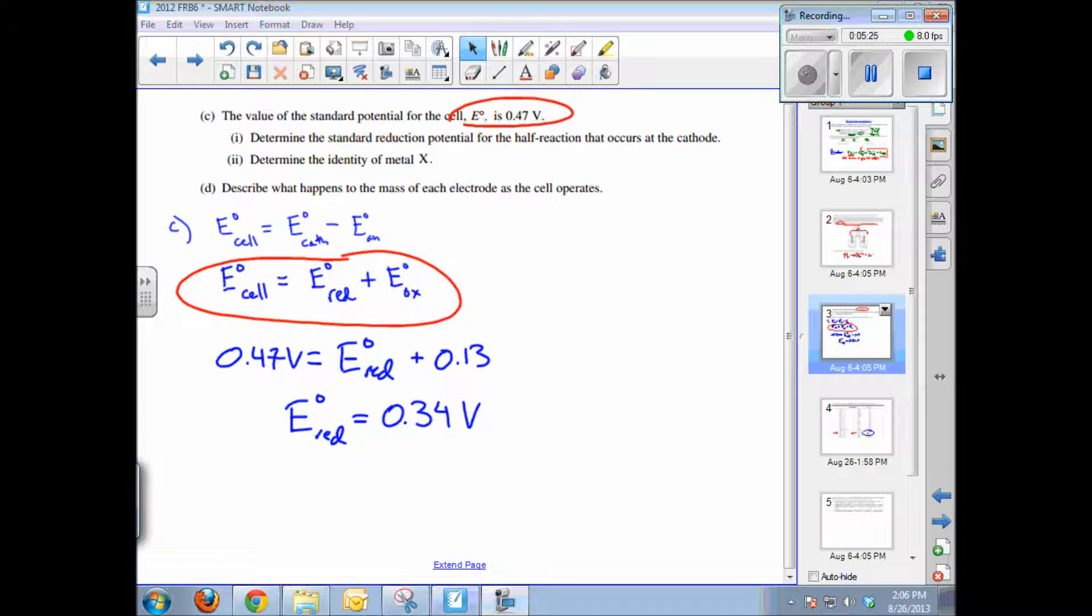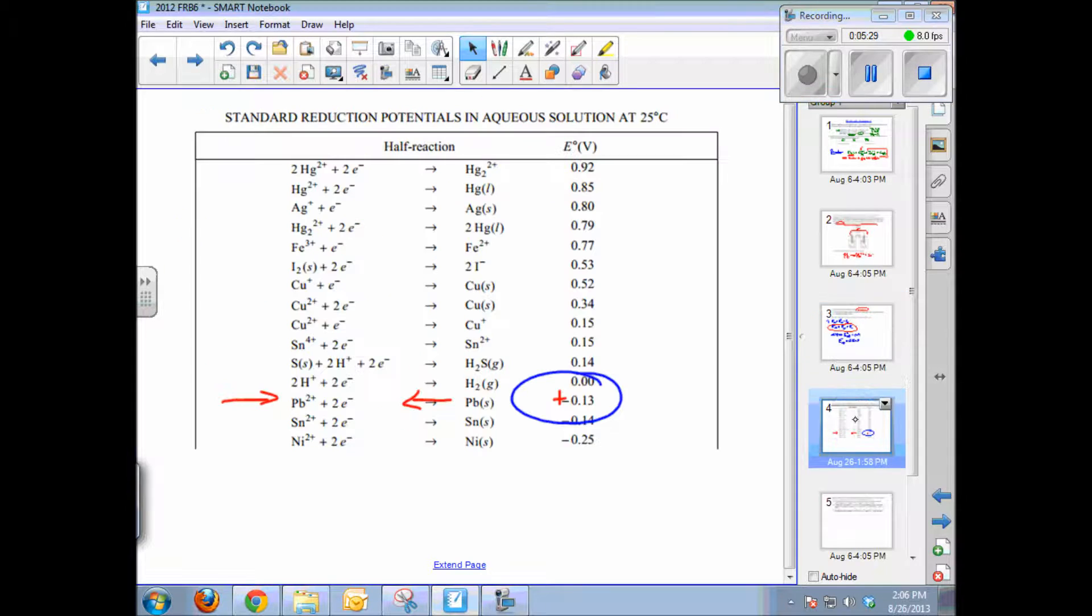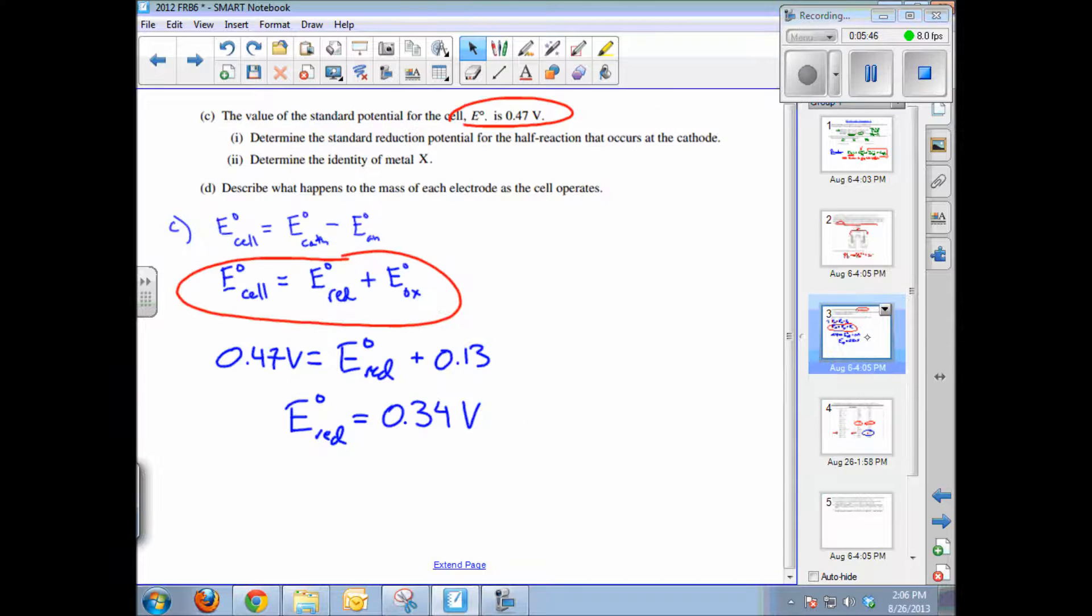So then what is the identity of the metal? Well, your best course of action here is to go back to your standard reduction potential table given to you in the exam. This is not the whole table. I've annotated it somewhat. But we just looked for some reaction that has a cell potential of 0.34 volts. And there it is. So our metal must be copper. And so that's the answer for the second part. X is equal to copper.